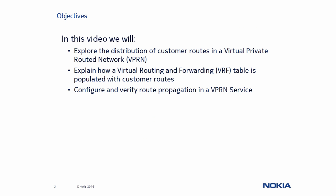In this video, we will explain how customer route information is propagated across a virtual private routed network to provide connectivity between different customer sites. We will see why PE routers add a route distinguisher and route target to customer routes before advertising them to other remote PE routers. We will then use our lab environment to show how we can verify route propagation across a VPRN on Nokia service routers.